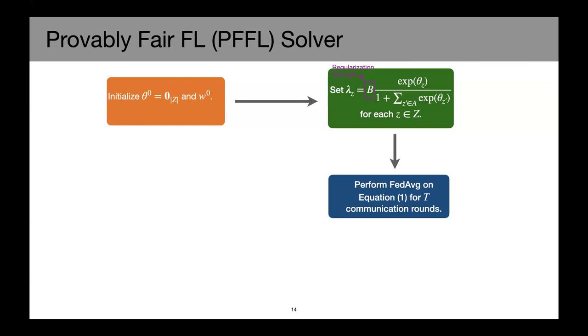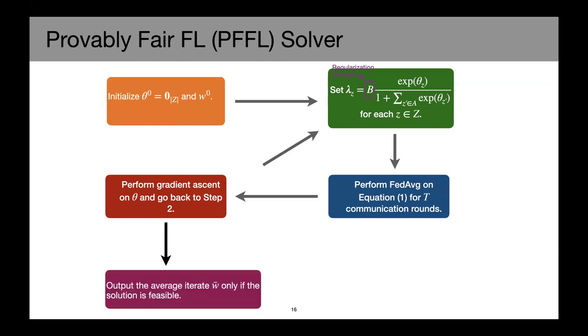For each iteration, we perform a full TA rounds federated averaging on the objective. And then the server receives the loss and the model parameter and performs a one-step gradient descent on the dual variable and then broadcasts the dual variable back to all the clients and that completes one training iteration. And we train for some fixed number of training iterations and at the end, we output the average iterate W bar only if the solution is feasible.